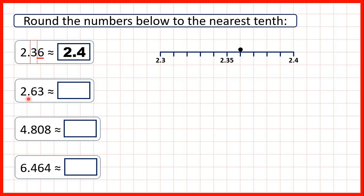Now we have 2.63. So to round to the nearest tenth we find the tenths digit and look to the right so look at our hundredths digit.